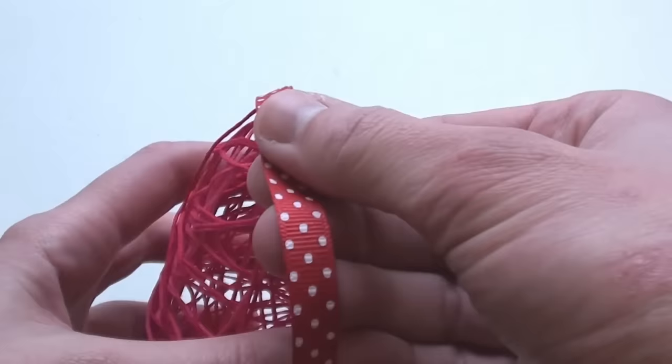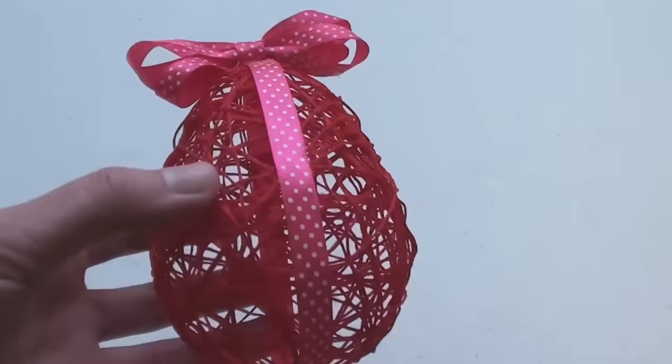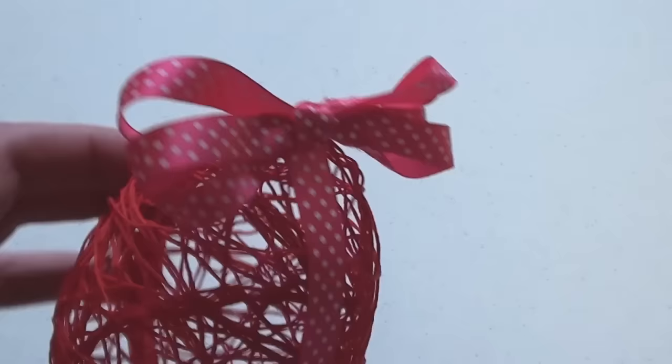Once your egg is done, you can leave it as is, or you can add some ribbon, gems, bling, flowers, or other decorative items to your egg. If you want to add something, use a hot glue gun to fasten the pieces to the egg. And here's a completed string egg with a glued on ribbon and bow on top.